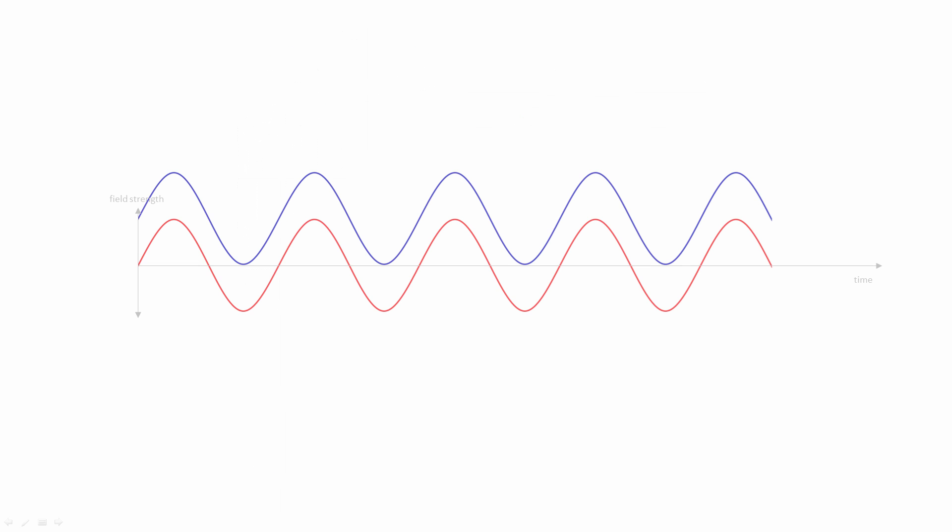This brings us to another important property of waves, namely phase. Phase is not really a characteristic of a wave on its own. It's a measure of where, or should I say when, a wave is in its cycle, if compared with another wave of the same frequency.